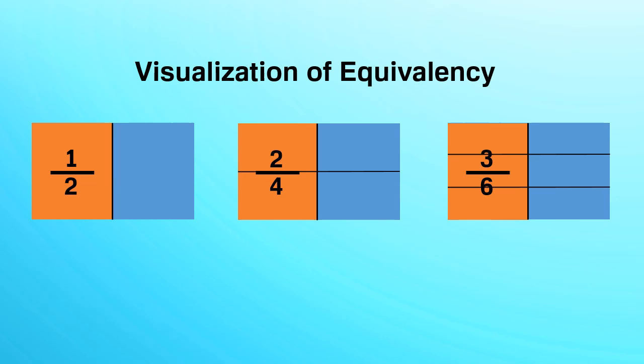For understanding, as you can see, we are selecting half of the rectangle in every example. So 1 by 2 is equal to 2 by 4, and 2 by 4 is equal to 3 by 6.